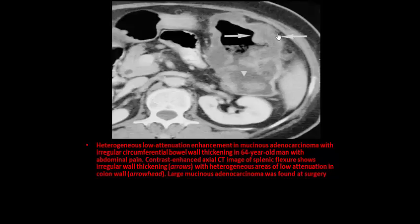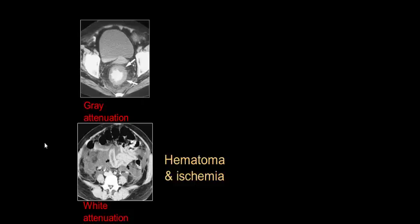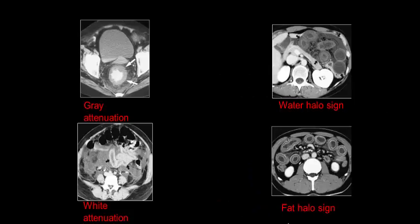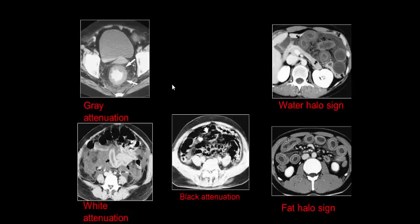Summarizing the attenuation patterns: gray attenuation is seen in malignant conditions; white attenuation shows opacification equal to or more than venous opacification, present in hematoma and ischemia; water halo sign presents with inner hypodense and outer hyperdense layers, seen in infections and radiation; the fat halo target sign has three layers with low attenuation between two hyperattenuating layers, present in IBD; and lastly, black attenuation represents intramural air — pneumatosis.